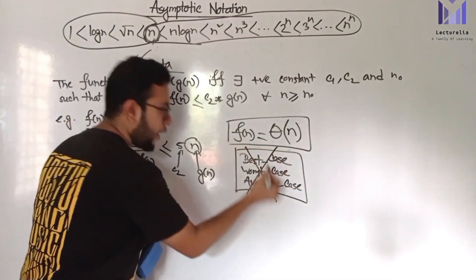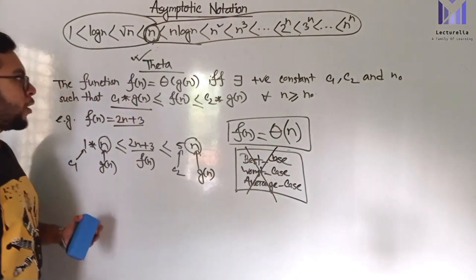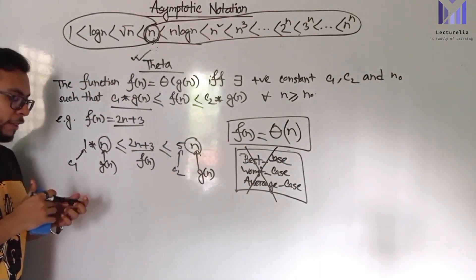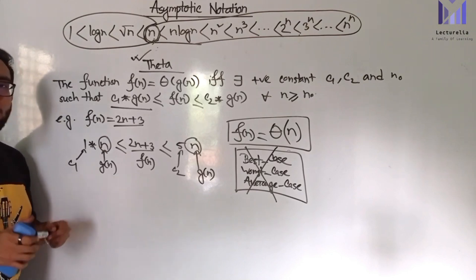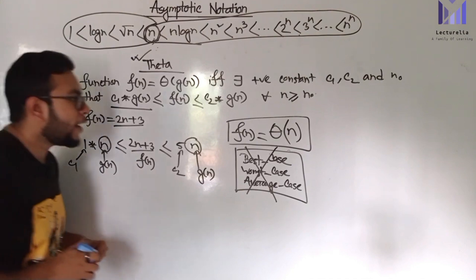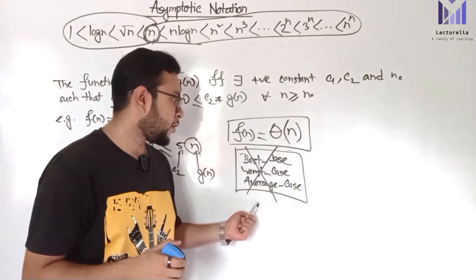Mainly we have Big O, Big Omega, and Theta to represent the upper bound and lower bound. But these do not represent the best case, worst case, or average case.